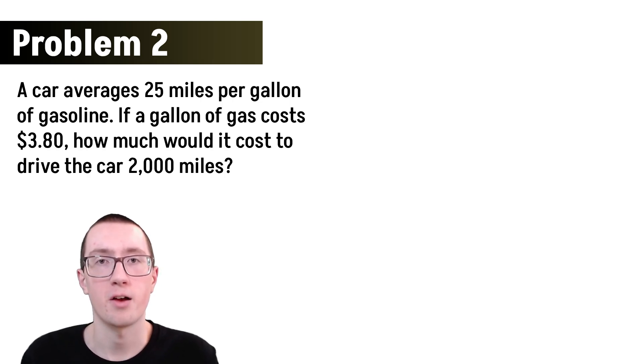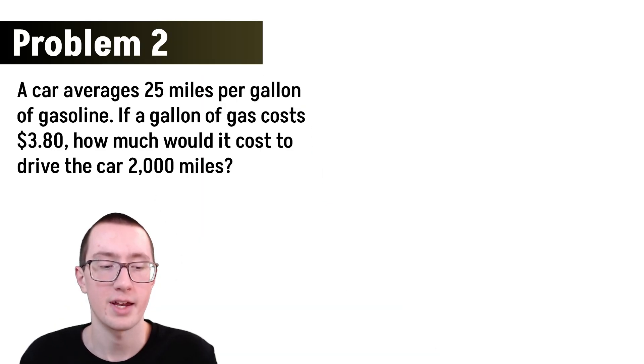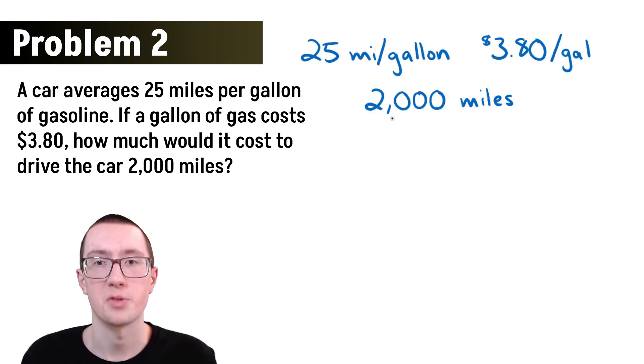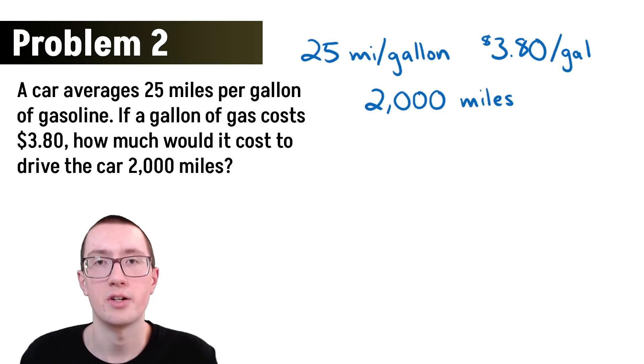Now the ACT, and the SAT as well, are going to have a lot of word problems. Word problems often don't take any more complicated math, sometimes it's even easier, but you have to know how to apply it from a real life situation. So here we have a car that's averaging 25 miles a gallon, and a gallon of gas costs $3.80. So how much would it cost to drive the car 2,000 miles? Here I've written down the three important pieces of information that we have. So how can we use this to solve our problem?